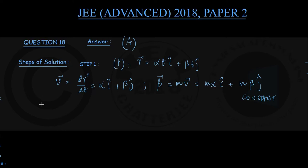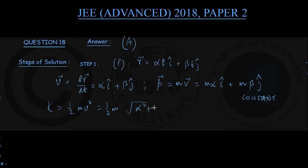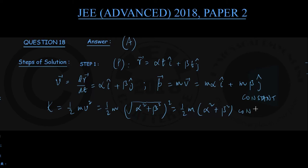Next, kinetic energy K is given by half·m·v², where m is the mass and v is the linear speed. Since velocity vector V is alpha·î plus beta·ĵ, the linear speed is the square root of alpha² plus beta². Therefore kinetic energy K equals half·m·(alpha² plus beta²), which is again a constant or conserved quantity for this particular motion.